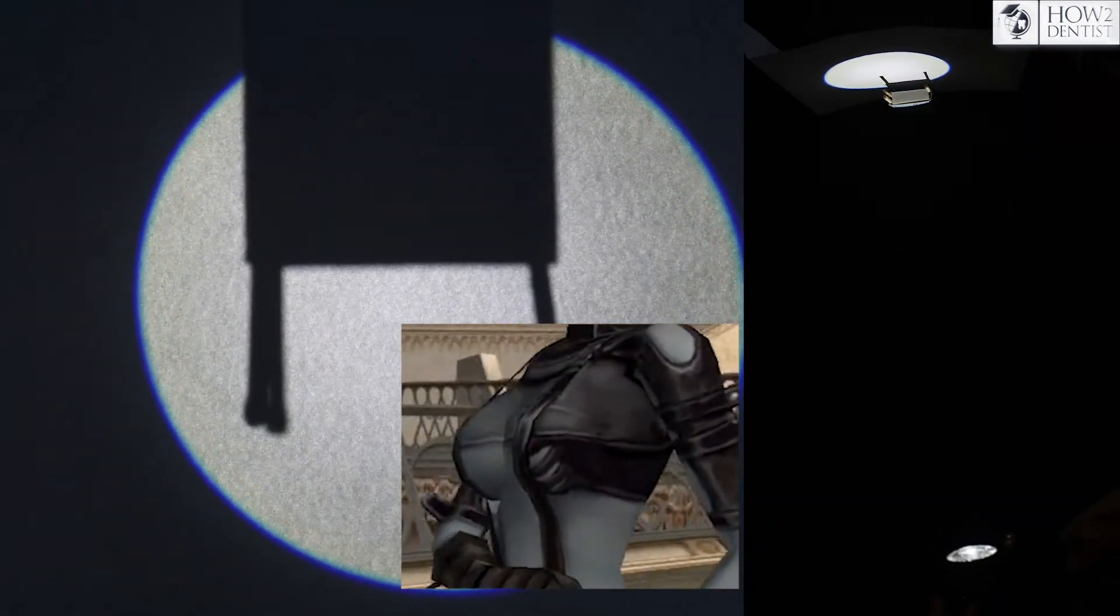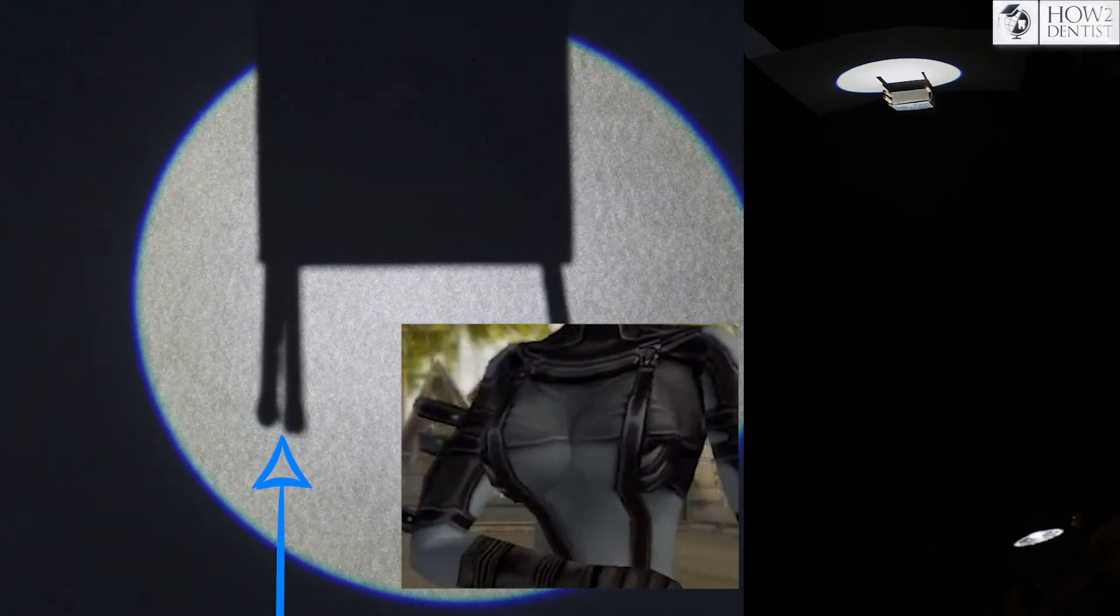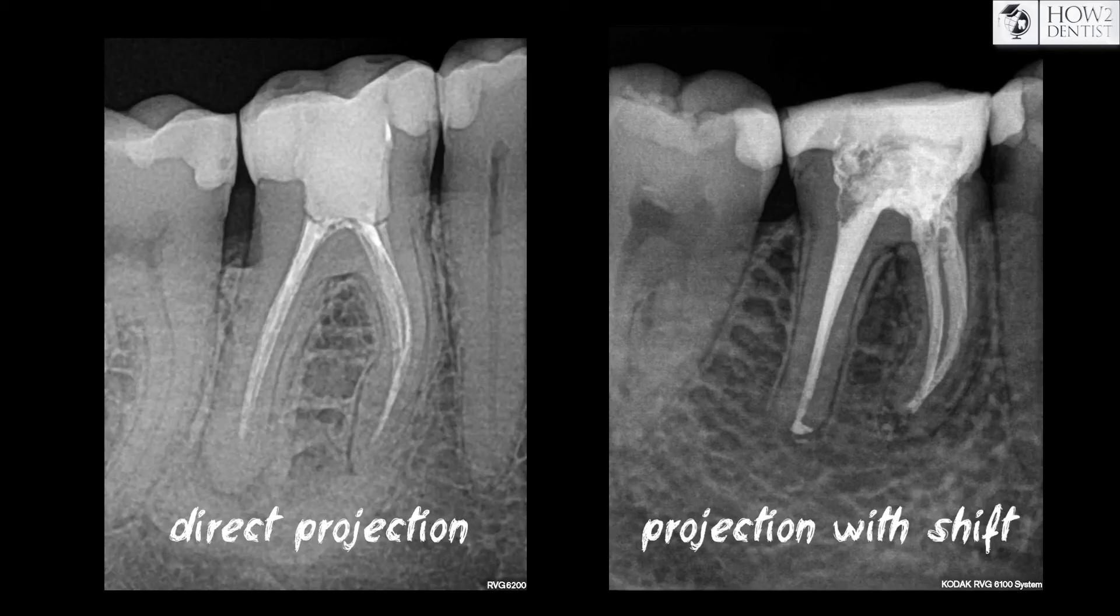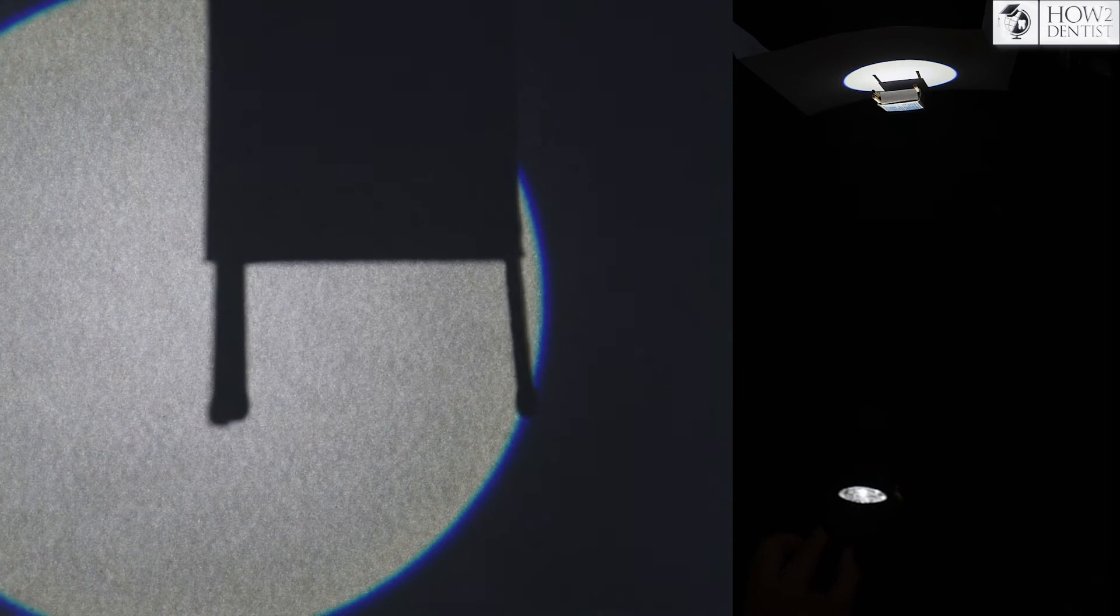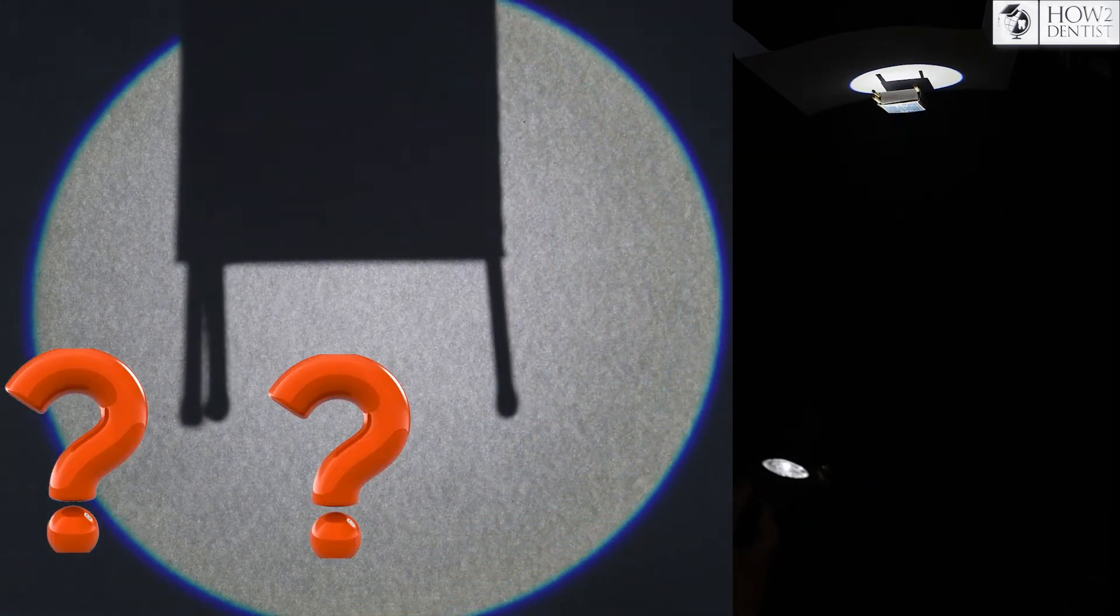So you can use the distal and medial shift. We move the source medially and see how the projections diverge. The same thing happens in real situations. With the distal shift, the picture will be similar. But how do we understand where the necessary root is?